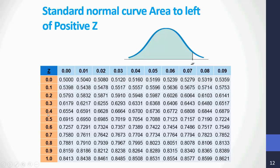What if we were asked to find the area to the left of 0.49? We pick up 0.4 vertically and 0.09 horizontally. At the intersection, the area to the left of 0.49 is 0.6879. What is the area to the left of 1.0? We pick up 1.0 vertically and read 0.00 horizontally. The area to the left of 1.0 is 0.8413.